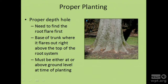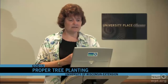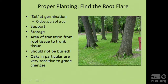Proper planting starts with finding the root flare—that area where the trunk flares out, which you can see very clearly in larger trees and is harder to find in younger trees. The root flare needs to be at or slightly above ground level at the time of planting. These trees were probably planted by squirrels, and they did an excellent job because the root flare is at the right level—though the angle isn't quite right. The root flare is important for the support of the tree and stores a lot of nutritive tissue; it should not be buried.